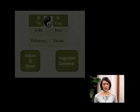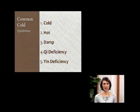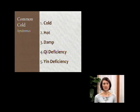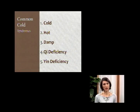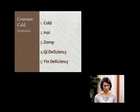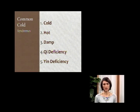We also talked about syndrome differentiation. The idea of syndrome differentiation involves two levels of diagnosis. Today we are going to use the common cold as our example. The common cold is the first level of diagnosis — if a patient comes in with a runny nose, sore throat, and sneezing, we might say the person has a cold. But in Chinese medicine we take that one step further and talk about sub-classifications, different kinds of colds.